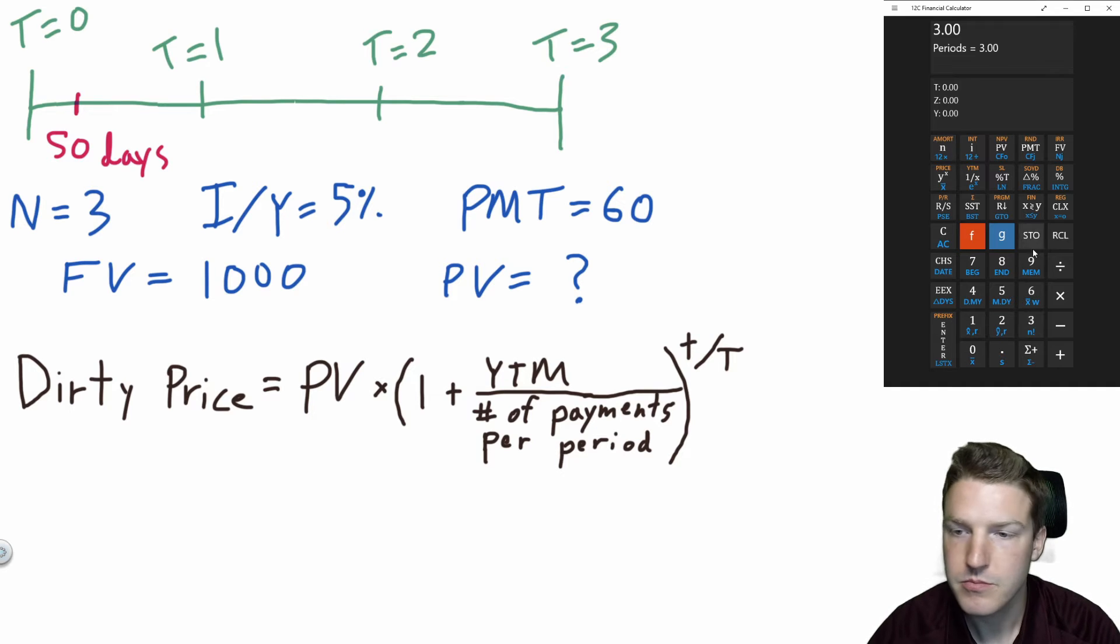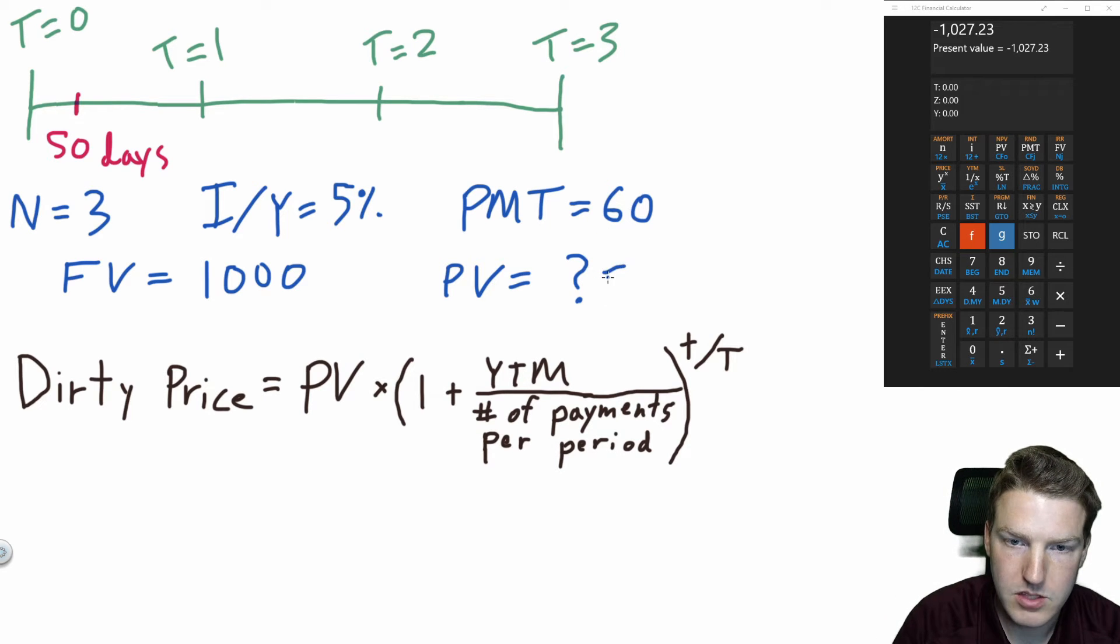So three is N, five is interest percent per year, 60 is the payment, and 1,000 is the future value. Then we'll calculate the present value, which gives us a value of 1,027.23. And that's important because we need it for the formula below.